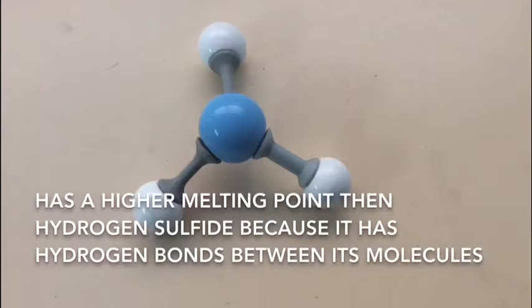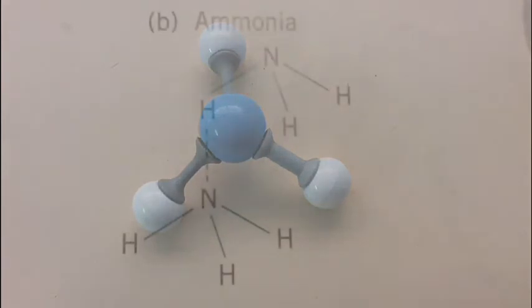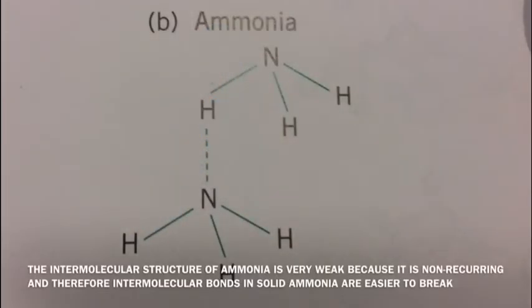but its inability to form a recurring crystal lattice makes it significantly easier to melt solid ammonia. There are three main areas of partial positive charge near each of the hydrogens, while there is only one area of partial negative charge near the nitrogen. This makes it difficult for ammonia to form a crystal lattice.